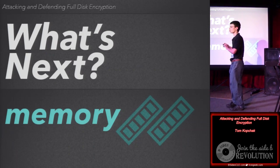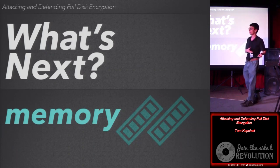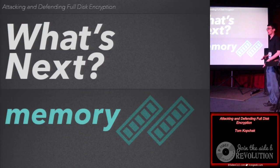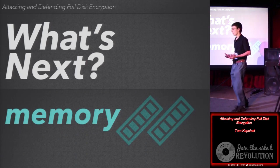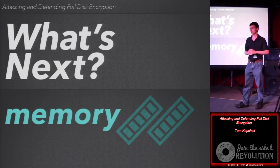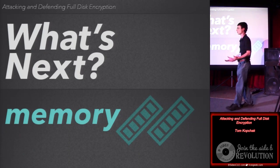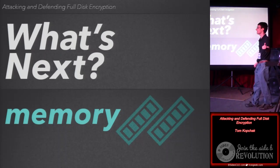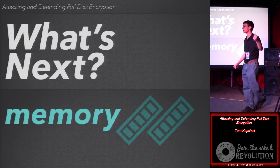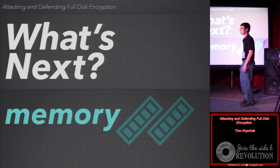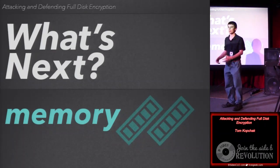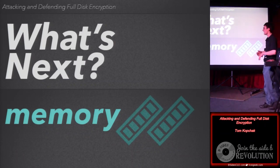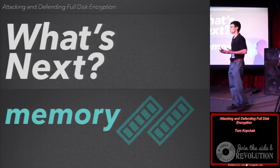The interesting thing about a memory dump is there are things in memory you'd never be able to get anywhere else. Memory has no file system, so anything you're looking at in a RAM capture will be some form of text, or you'll have to do file carving to pull data out. If you log into an email account, that password is in plain text in memory and can be easily recovered. That's why forensic investigators, if they have the ability to get a memory dump, will always do it now — it's just so valuable.